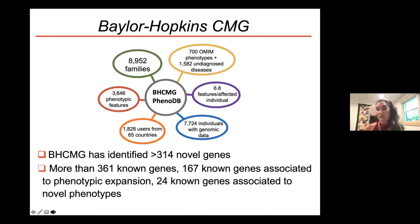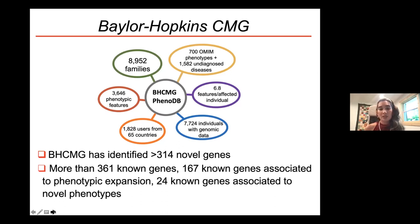VariantMatcher is a tool we developed to share data from our own sequencing projects. The main project has been the Baylor Hopkins Center for Mendelian Genomics over the last 10 years, with Dr. Val as PI and Dr. Homish and I as co-investigators. This project has sequenced more than 7,700 individuals, and for more than half of those we have phenotypic information in our PhenoDB database.